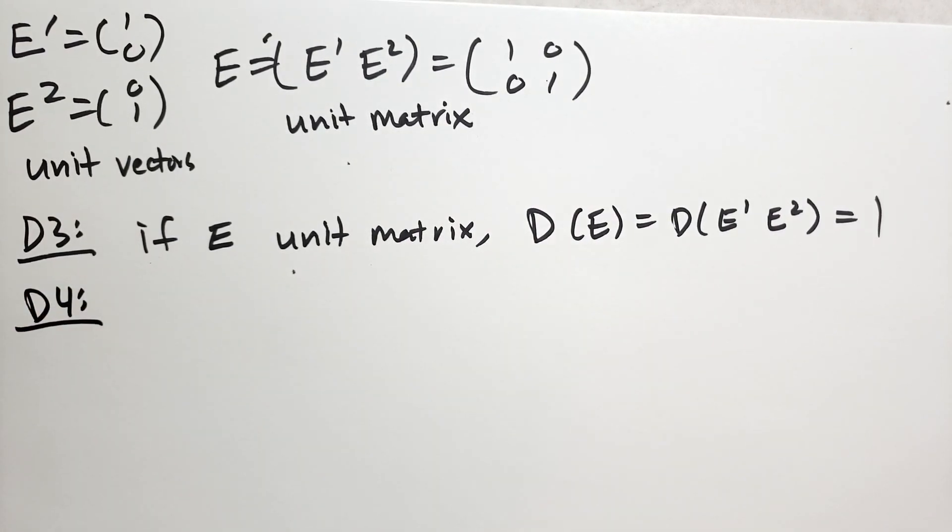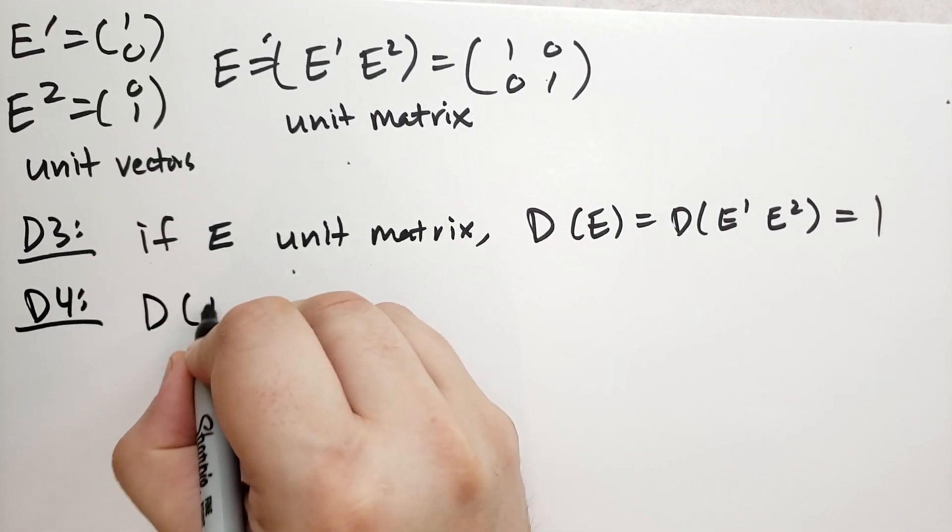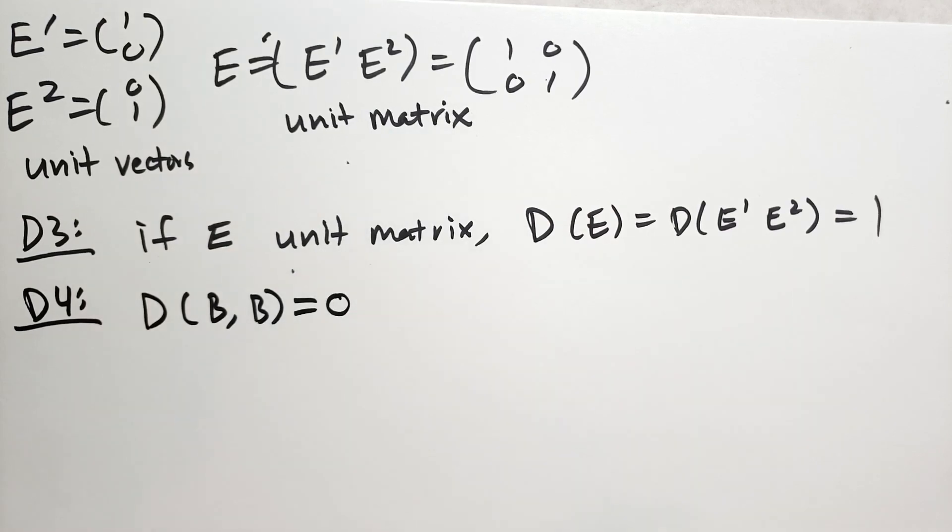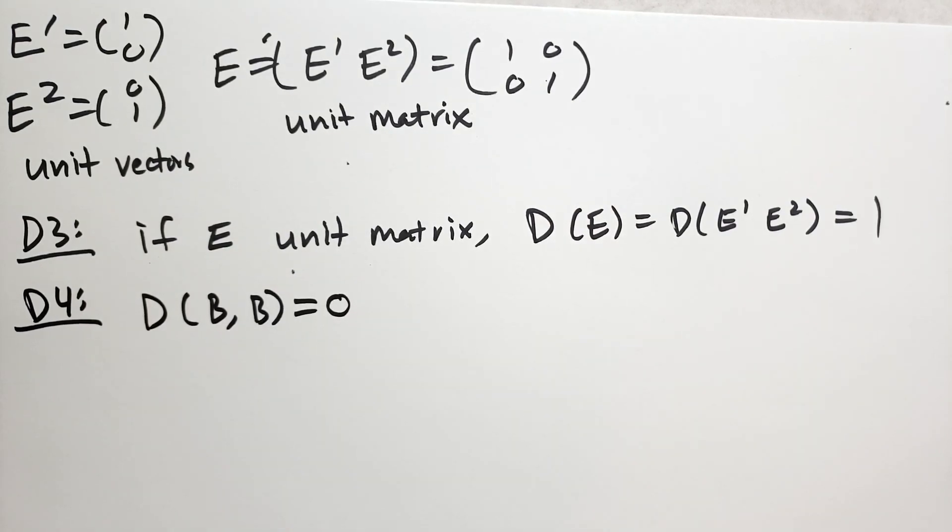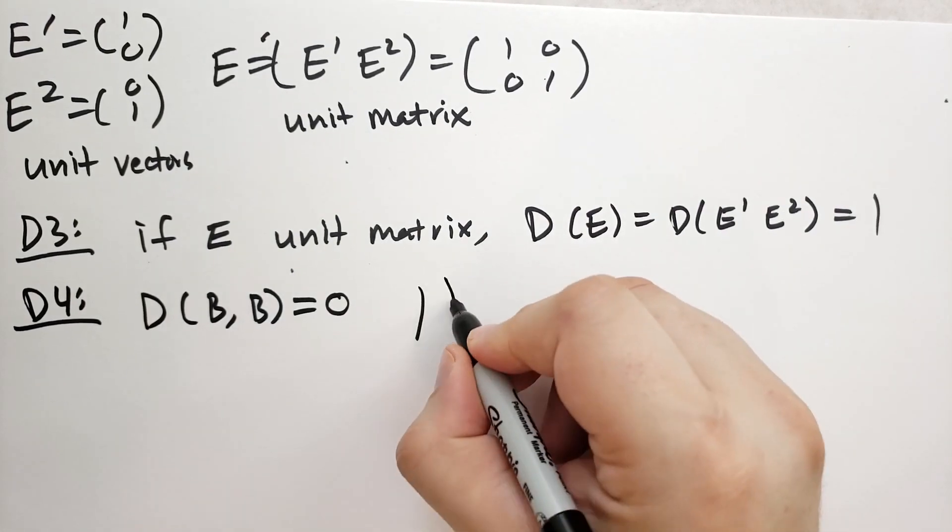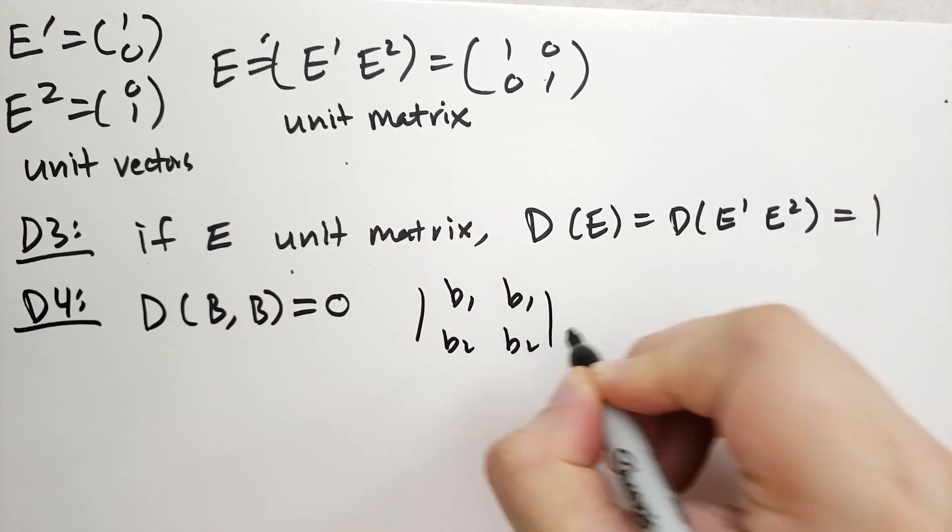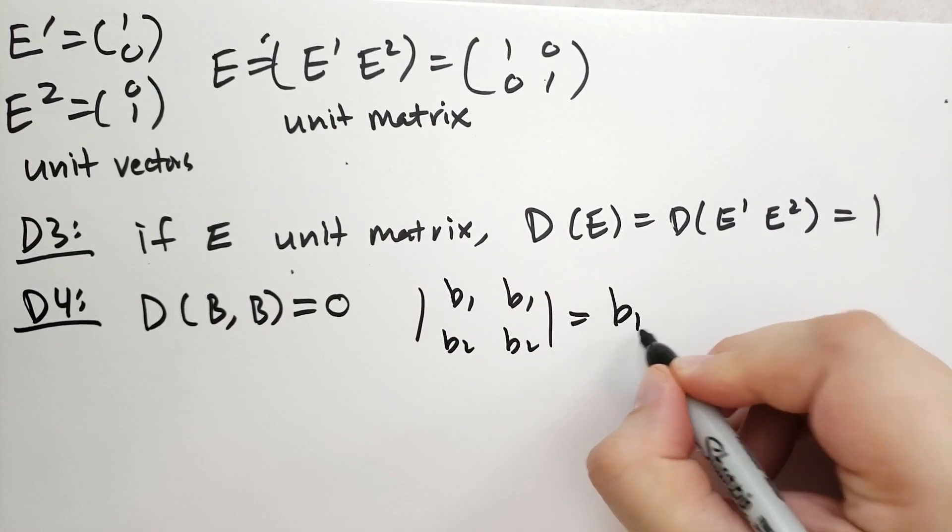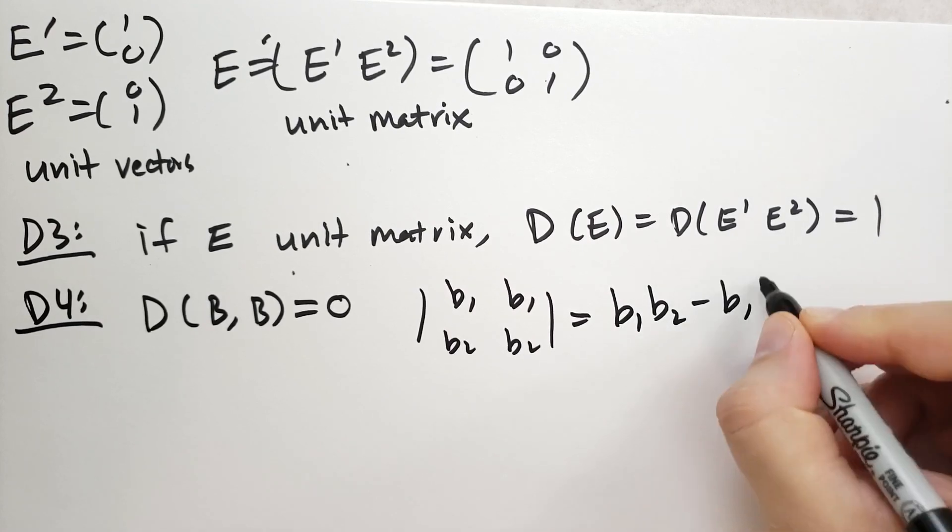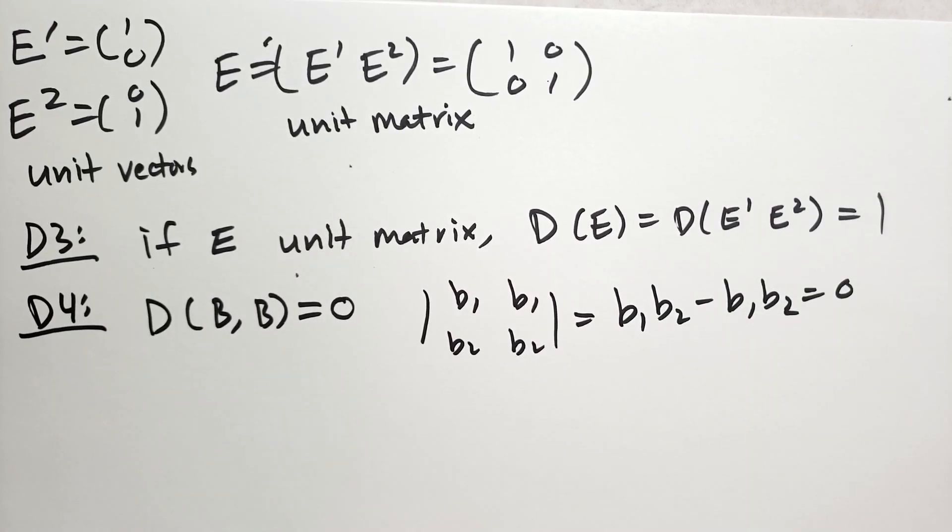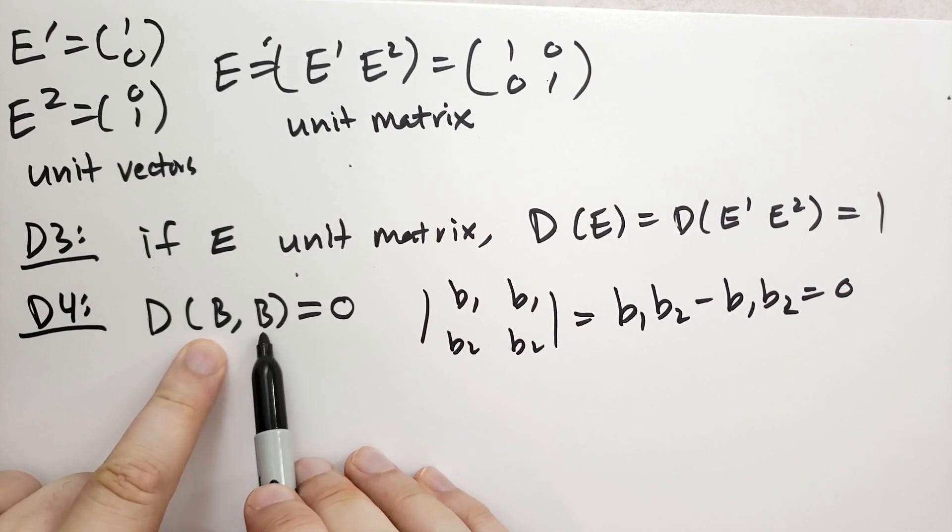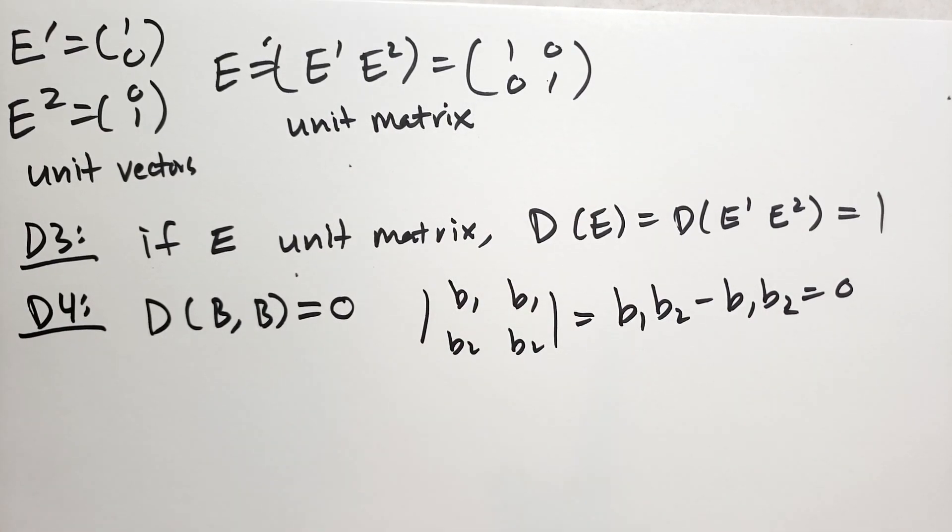D4 says that if two columns of the matrix are equal, the determinant is equal to 0. So D of the same column is 0. So why is that? Well, let's take B1, B2, B1, B2. So we get B1B2 minus B1B2, which is 0. So if we can take the determinant of the same matrices, we get 0. So if we can reduce somehow the matrices that we're solving the determinant for to column vectors that are the same, we get 0.